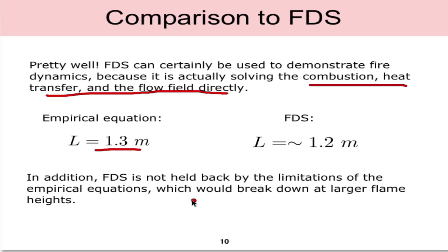Whereas our empirical equation is using previous data sets to estimate what the flame height would be. Additionally, FDS is not held back or limited like the empirical equation. The empirical equation would break down at larger flame heights, any flame height that would be outside of that experimental data set the relationship would begin to break down. Whereas in FDS we could always make a larger heat release rate or larger burning area and because it's solving for the combustion and physics directly we'd be able to use it for a wider range of problems.